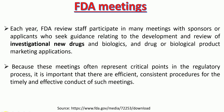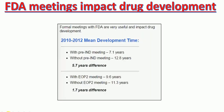Why is there a need to have FDA meetings during the drug development process? Because having formal meetings with the FDA has a huge impact. For example, data shows that with pre-IND meetings, the time taken for drug development is 7.1 years, whereas without a pre-IND meeting, the time taken is 12.80 years — a difference of 5.7 years. Therefore, it is important to have a meeting with the FDA.